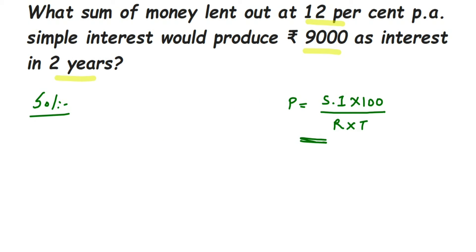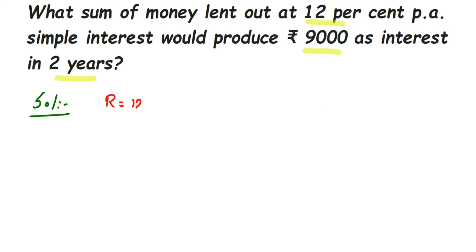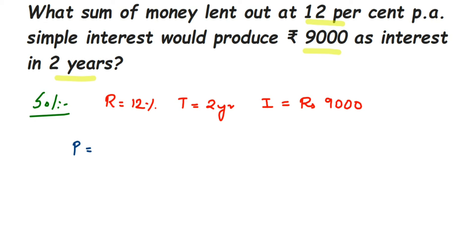Before substituting, let me write down what is given. Rate is 12%, time is 2 years, and simple interest is rupees 9,000. Now we have to find out the principal. So P is equal to simple interest multiplied by 100, divided by rate into time.